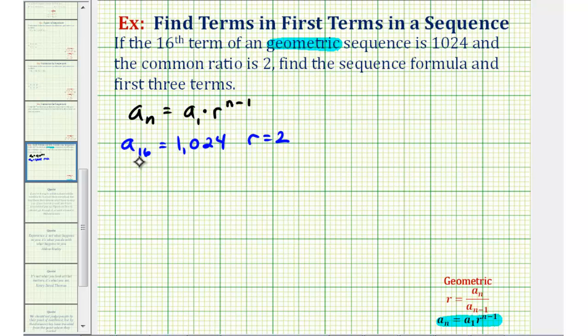And now we'll use this information to perform substitution into our sequence formula. So if we let a sub n be equal to a sub 16, we can substitute 1024 for a sub n as long as we substitute 16 for n.